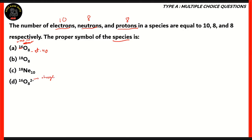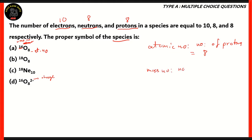If you have a lot more electrons than the neutral stage, then you will have a charge associated with the atom, or this ion. The atomic number is equal to the number of protons, so in this case, the atomic number equals 8. The mass number is equal to the number of protons and neutrons, so it will be 8 plus 8, which gives you 16.